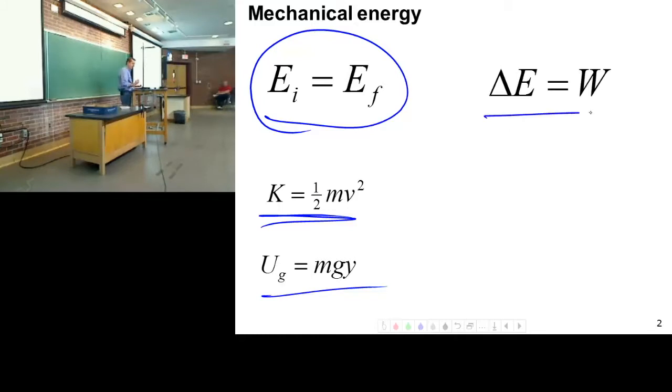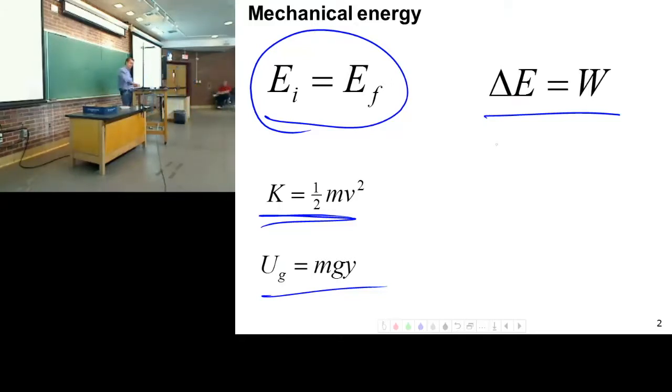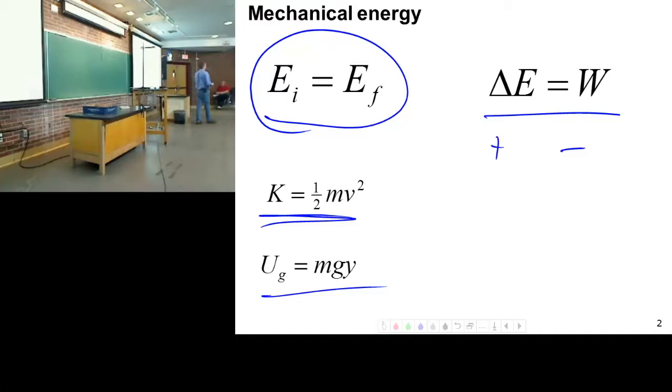And then we have the work energy theorem. Work equals the change in energy. Now I've not said this before, but remember we can have negative work and positive work. When we had negative and positive in kinematics, negative was to the left or down, positive was to the right or up. What do you think negative or positive work means?